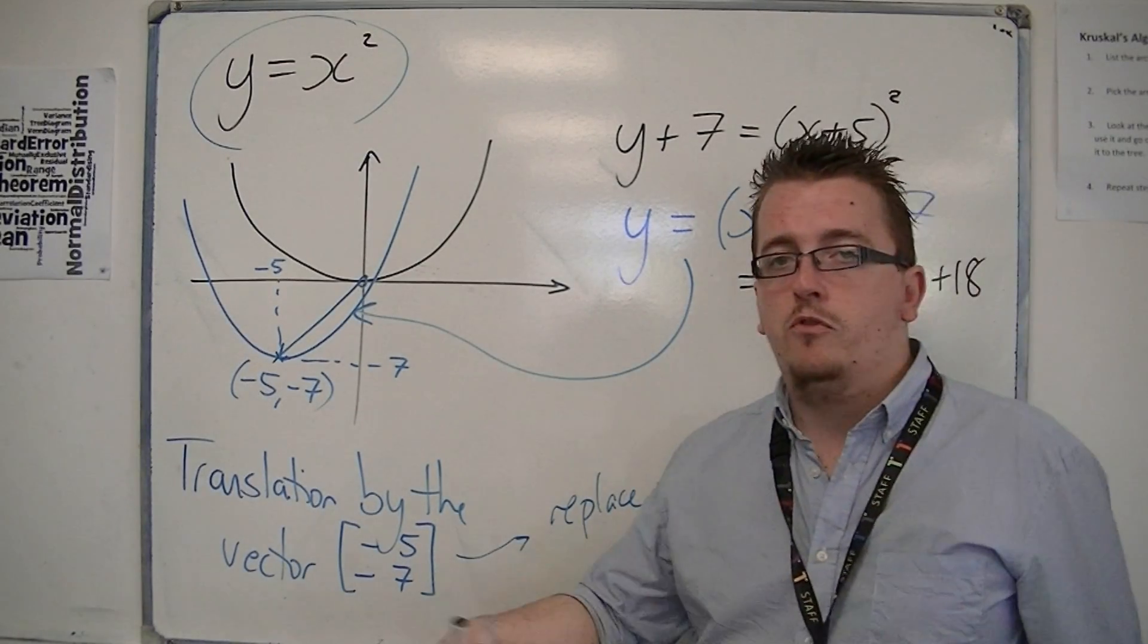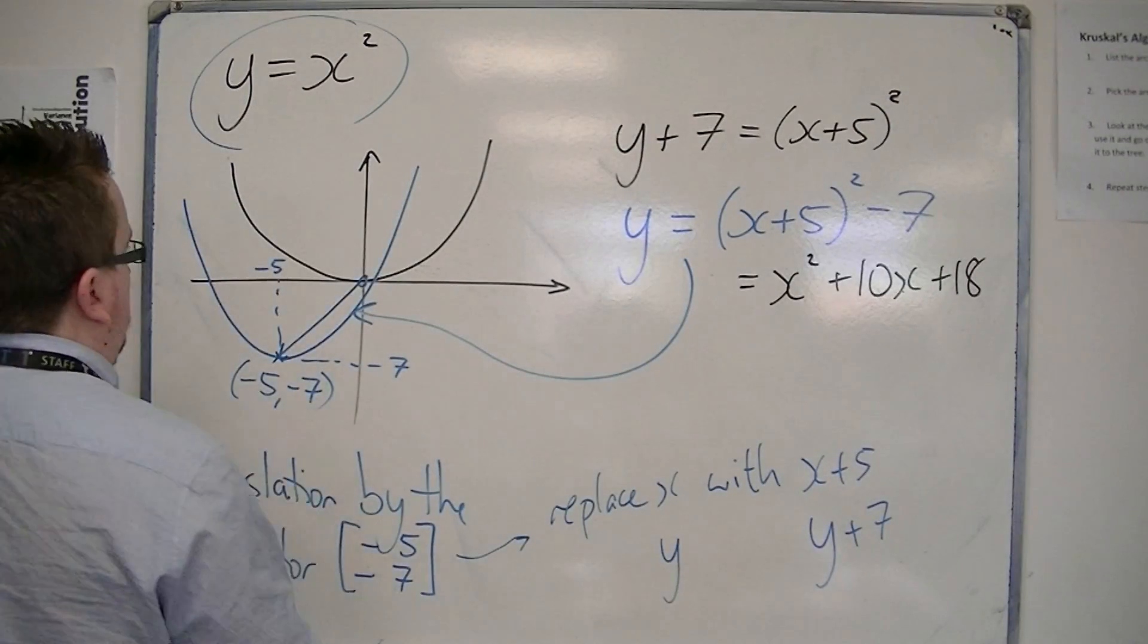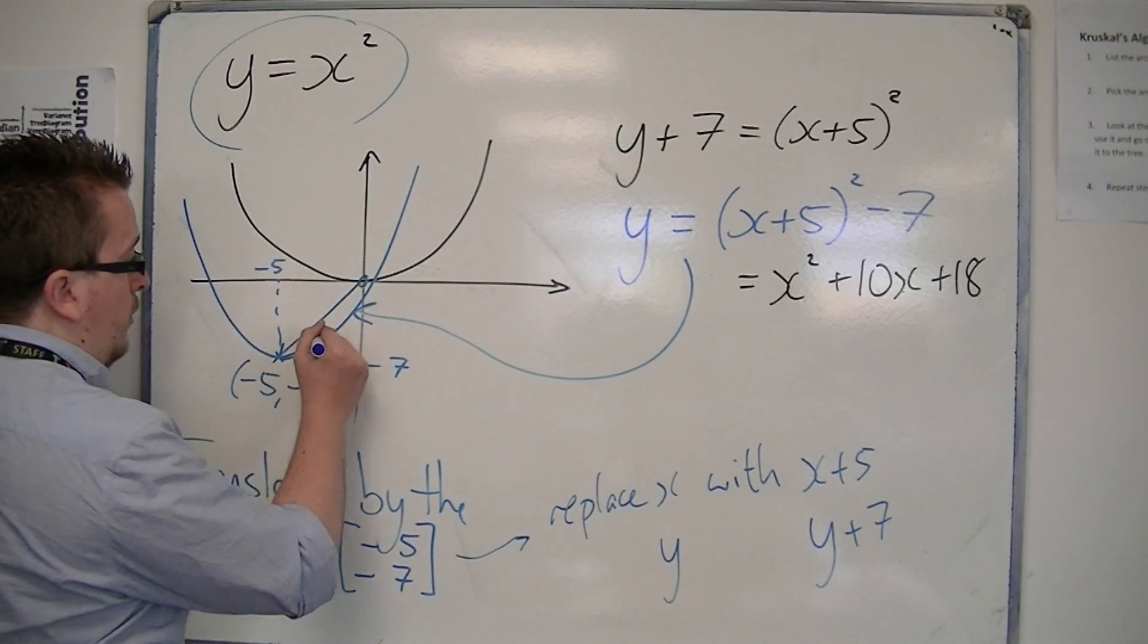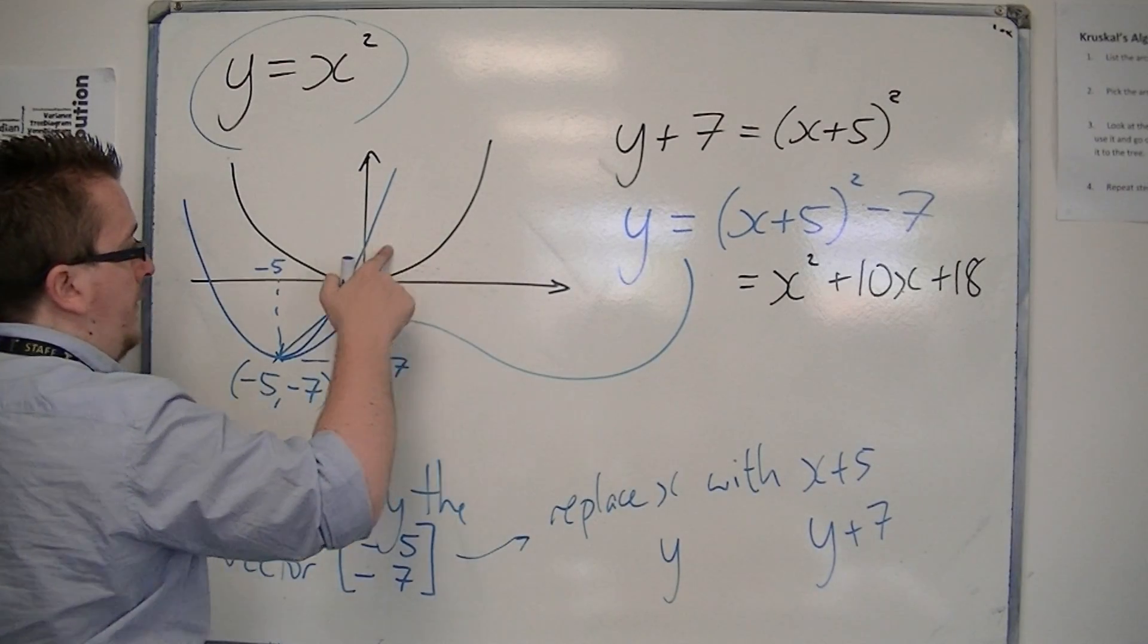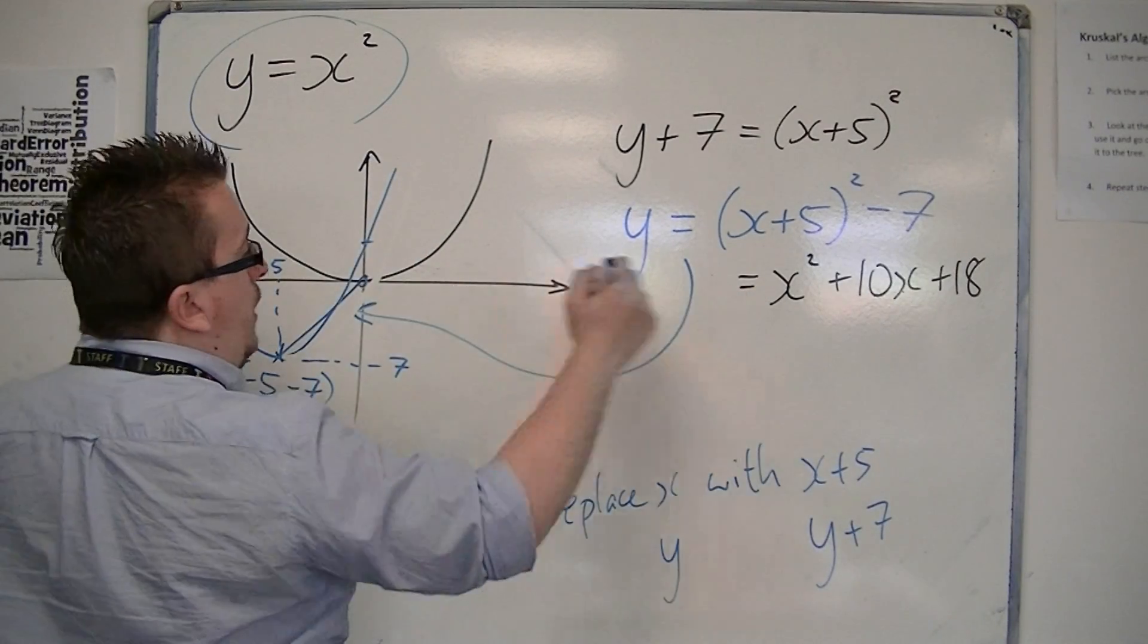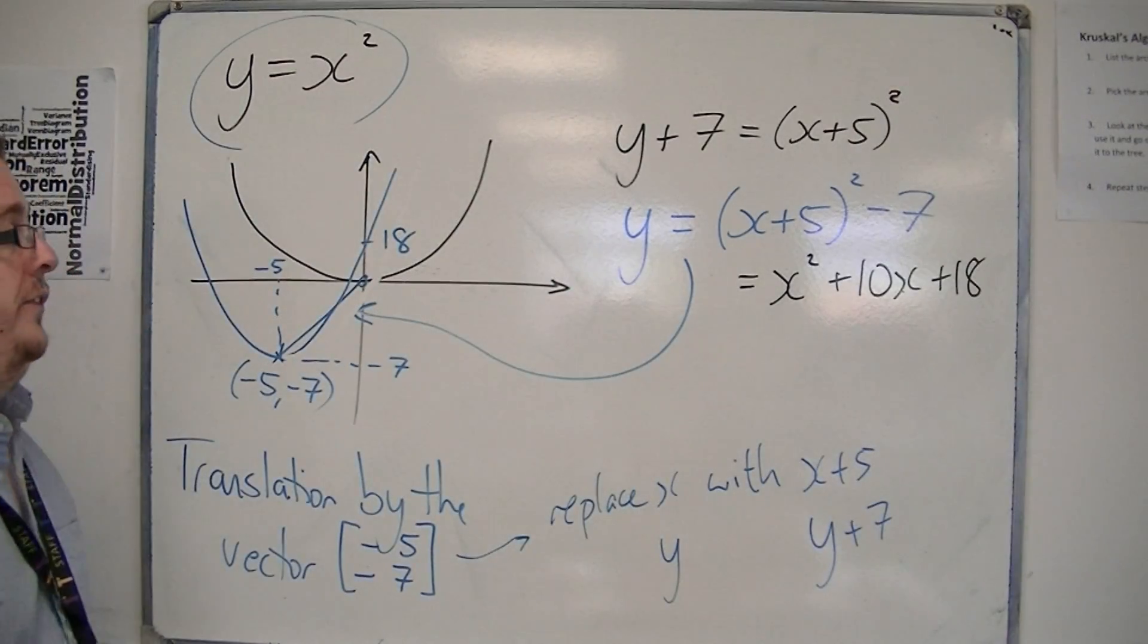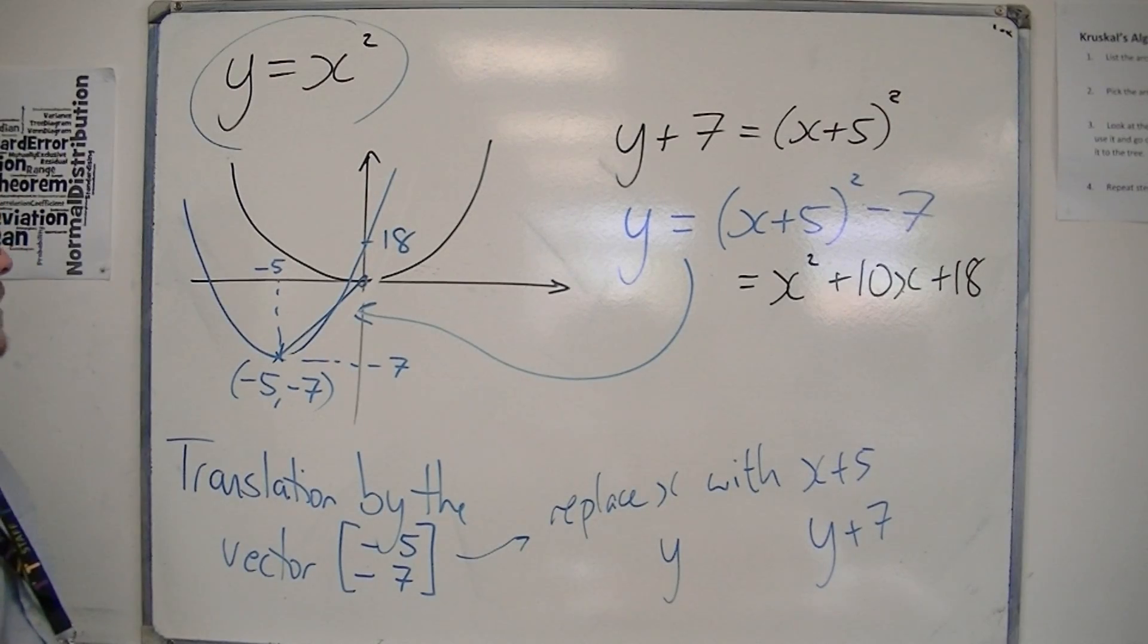So you can multiply out the brackets. The way that I've drawn that isn't quite accurate. The curve would actually be coming up more like this, so that it is now going through 18 on the y-axis given by that constant term at the end of the equation.